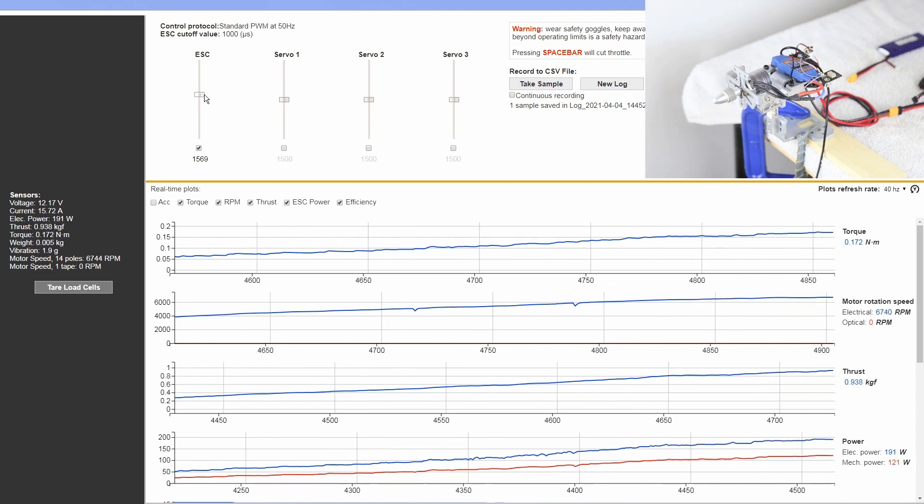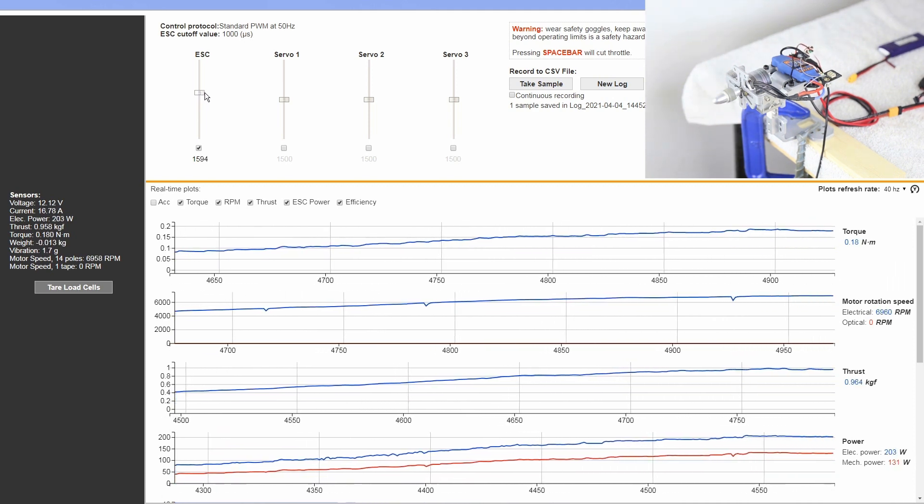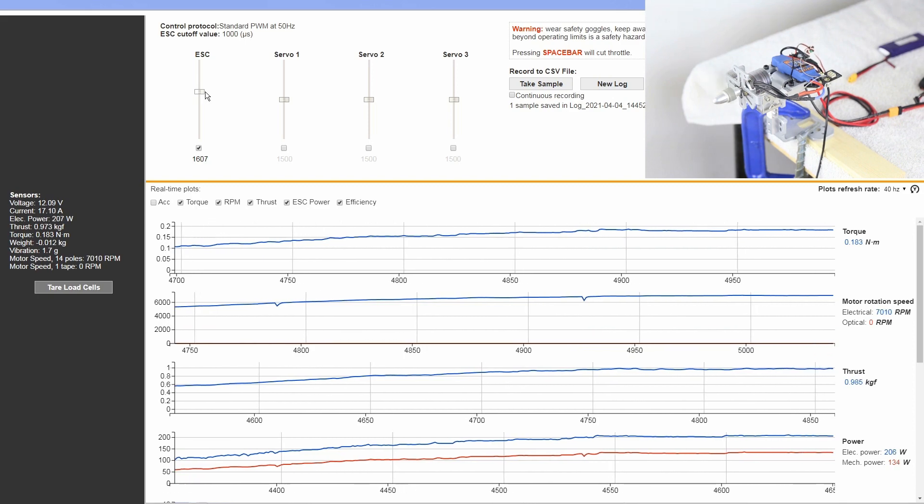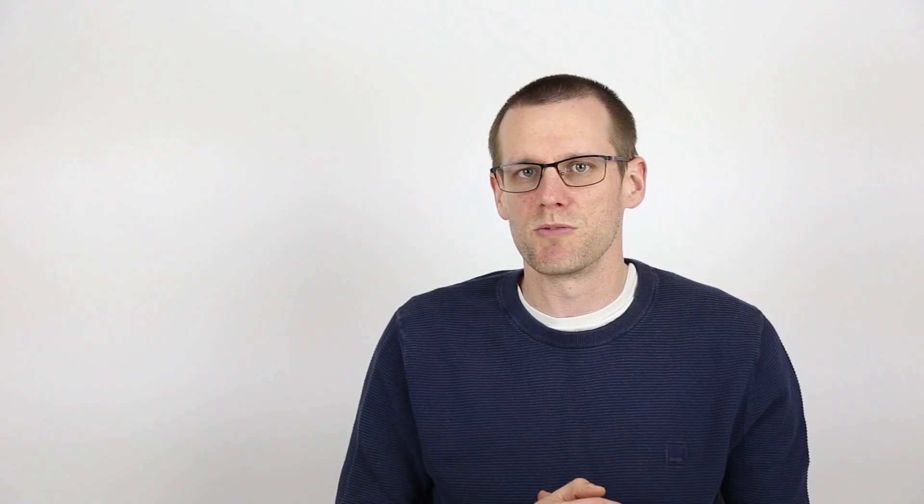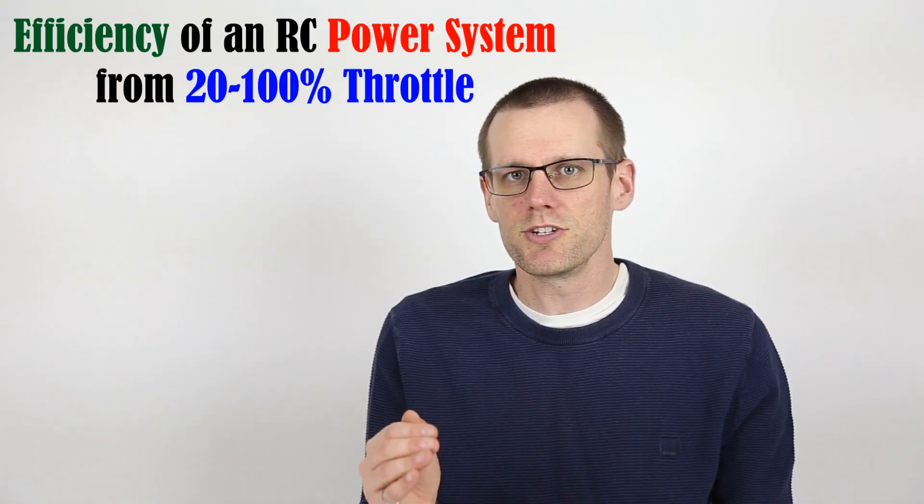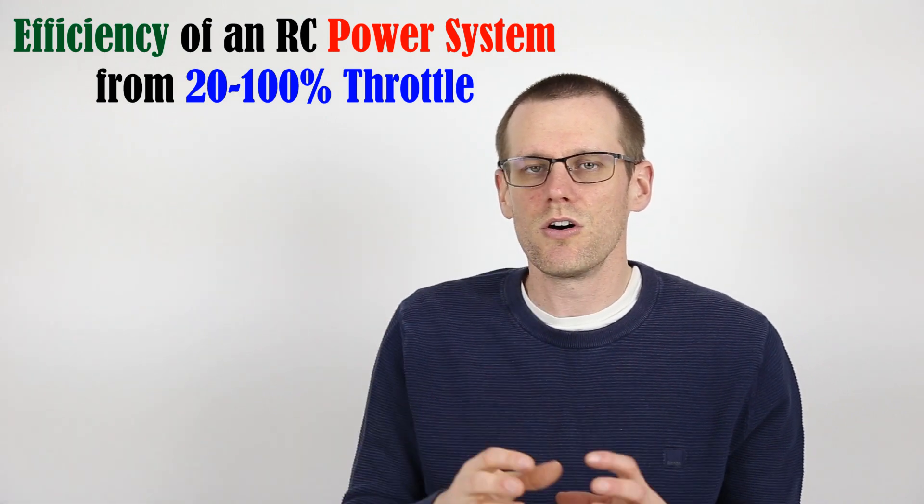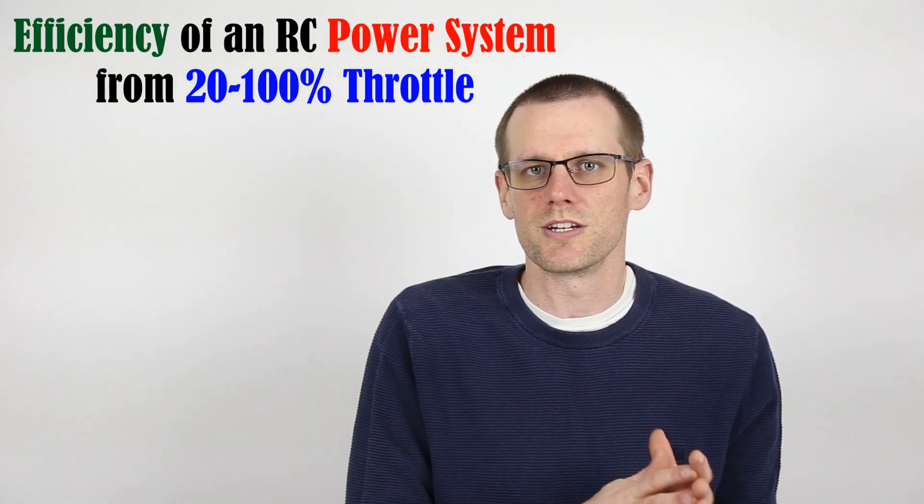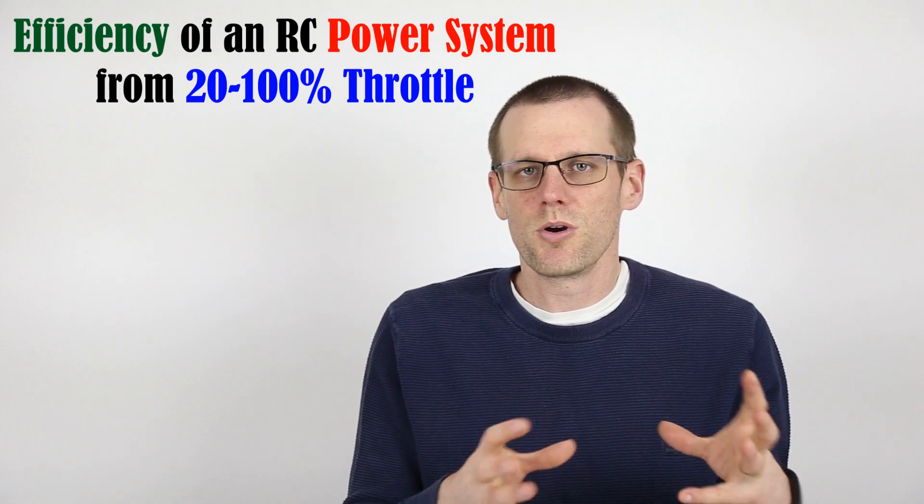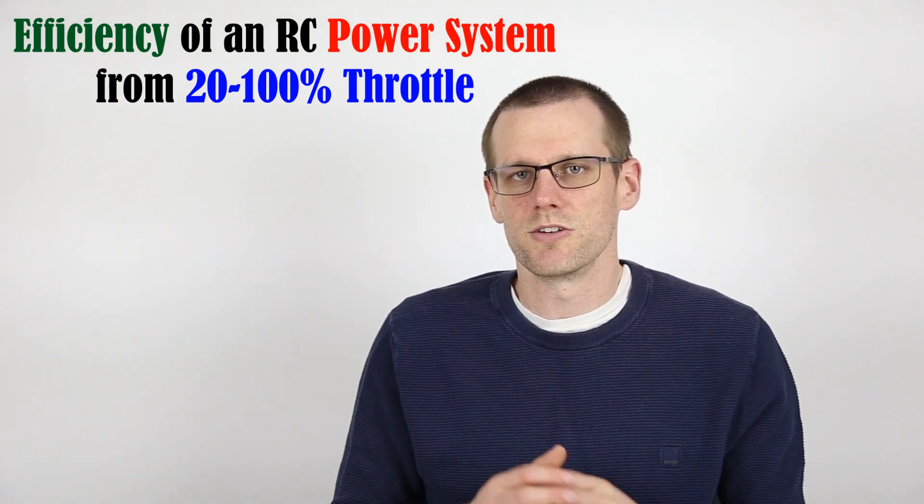If you haven't seen that video from last week, I would highly suggest watching it. I will leave a link in the description below. This week we're going to take it a step further and look at the efficiency of our system as we go through 100% all the way down to a low percentage of throttle, somewhere around that 20 to 30% range.